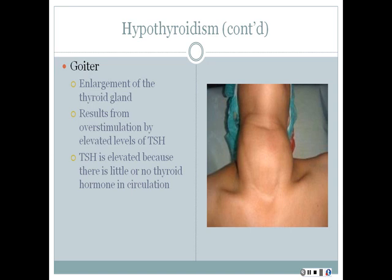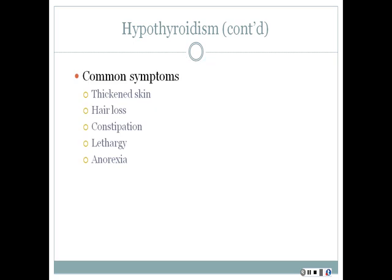Certain medications can also cause hypothyroidism. Amiodarone is a drug used for cardiac arrhythmias, but it can cause interestingly enough both hypo and hyperthyroidism. Some of the common symptoms include thickened skin, hair loss, constipation, lethargy, and anorexia — just think of things kind of slowing down.